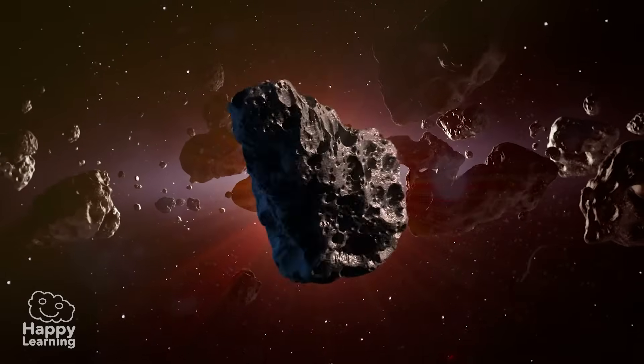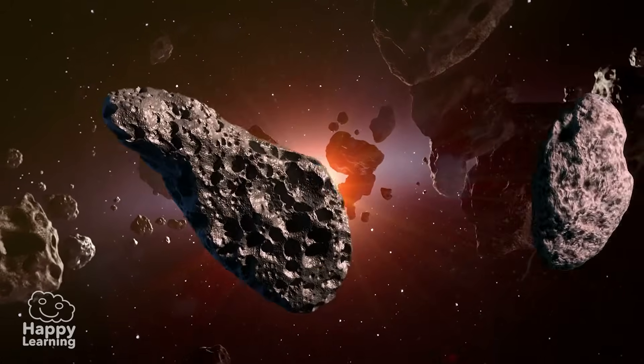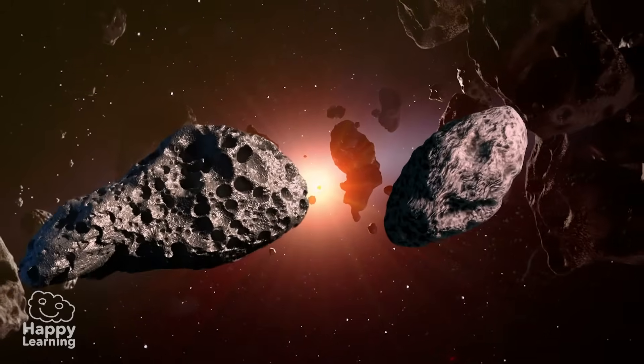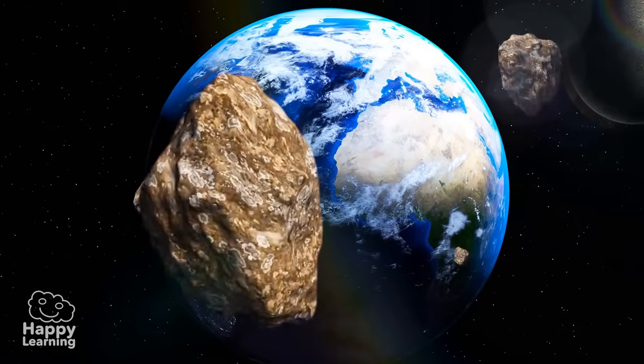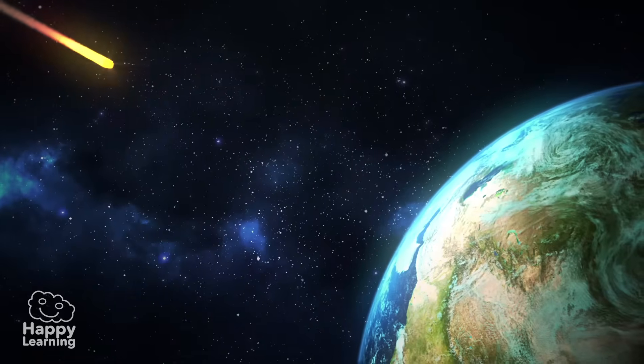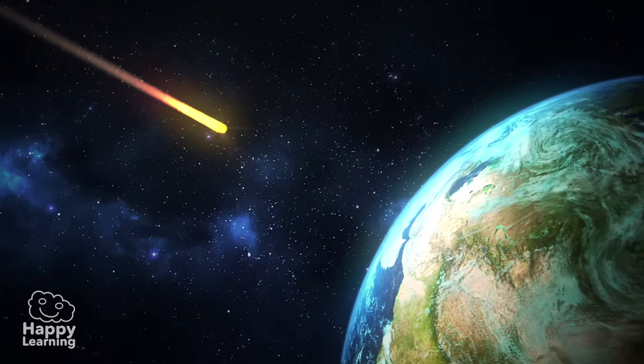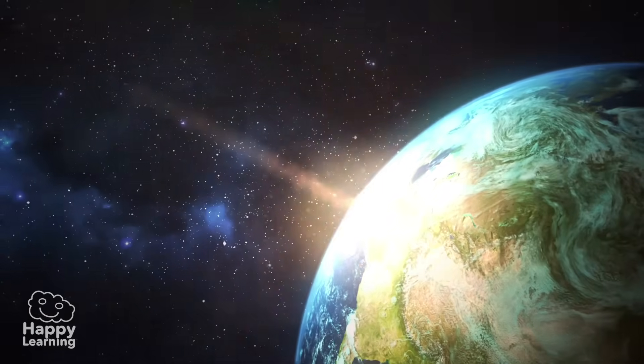As you can see in the images, they have irregular shapes. Actually, no two asteroids are identical. The main problem with asteroids is that some of them are potentially dangerous because they can come out of their orbit.